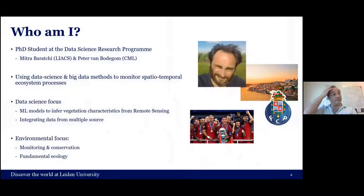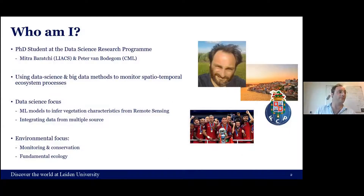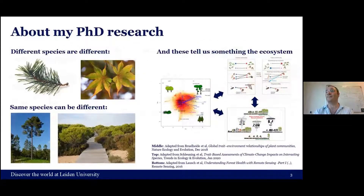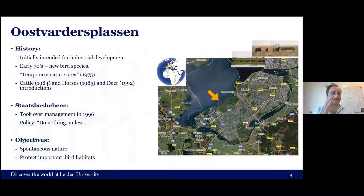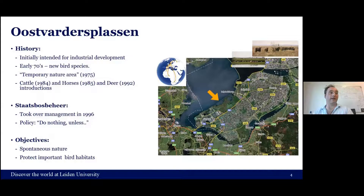My topic is about using ecoinformatics tools to monitor dynamics of ecosystems, integrating data from multiple sources to answer fundamental ecology questions. My focus is on monitoring biophysical and biochemical traits of vegetation, relating that to nature-oriented solutions. That's why we focus on the Oostvaardersplassen, a nature park in the Netherlands nearby Amsterdam — a protected area where herbivores roam free without predators, with very small management, long considered a good example of rewilding.